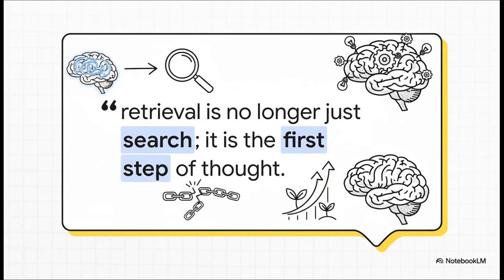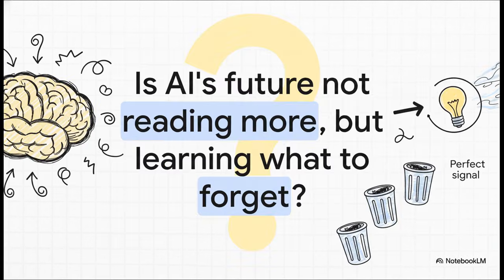But if you want to sum up the massive shift that's happening here, this quote from the analysis just says it all perfectly. In the shared latent space of Clara, retrieval is no longer just search. It is the first step of thought. This changes the whole process from a dumb file lookup into an active part of the AI's reasoning itself. Which kind of leaves us with this one final fascinating thought. Maybe the next great leap forward in AI isn't about building bigger models that can read and process more and more terabytes of information. Maybe it's about building smarter models that have finally mastered the art of forgetting, of elegantly and efficiently ignoring all the noise to find that one perfect signal.